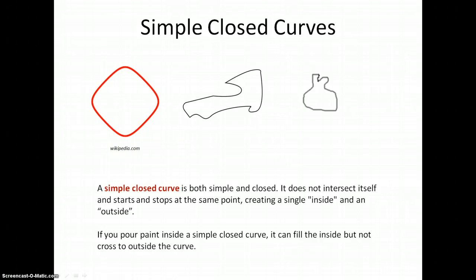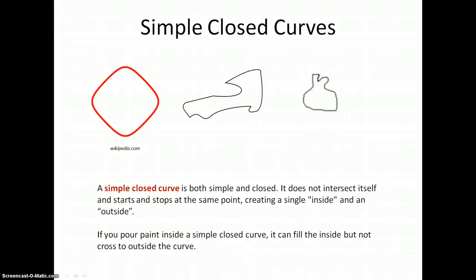Simple closed curves are both simple and closed — they have both properties. They're simple because they don't cross themselves. They're closed because they start and stop at the same point, so that there's an inside and an outside.